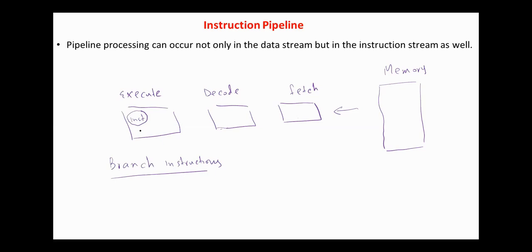The idea of instruction pipeline is that while we are executing an instruction, the next instruction can be read from memory, and moreover while an instruction is executed the next can be decoded and the next can be fetched. In the case of branch instructions, the pipeline should be emptied. For example, if we have a branch unconditionally to location XX, the instructions in the decode and fetch phases will not be executed, and one solution is to empty the pipeline.